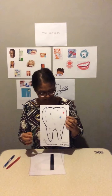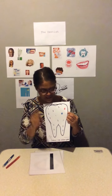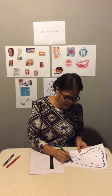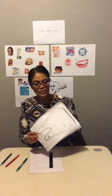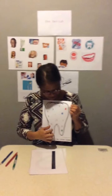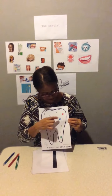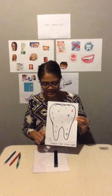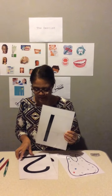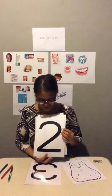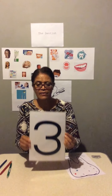And then our last number, number 3, we are going to colour green. So you are going to look on your worksheet, the tooth, and then you're going to colour the numbers: number 1, number 2, and number 3.